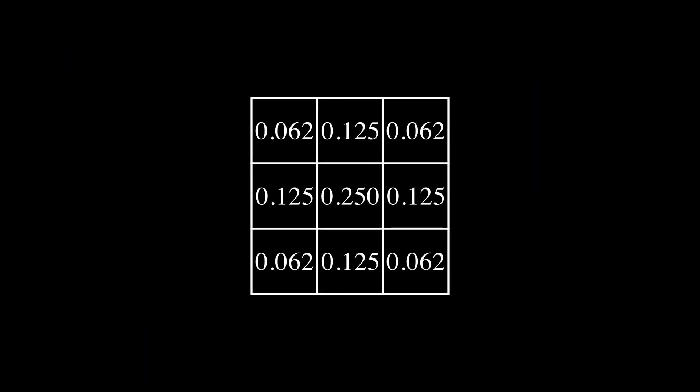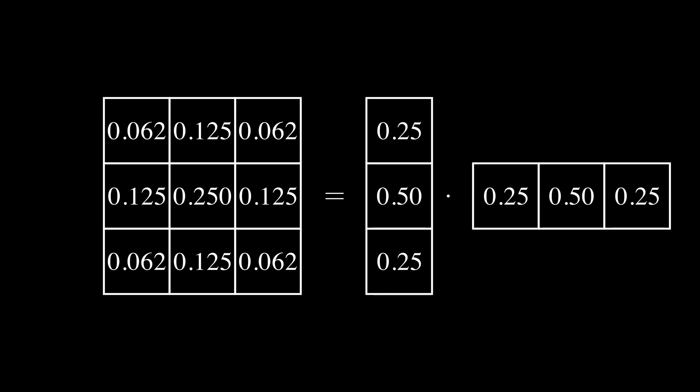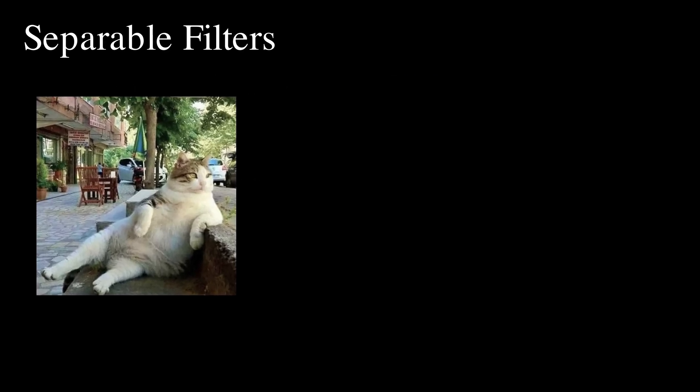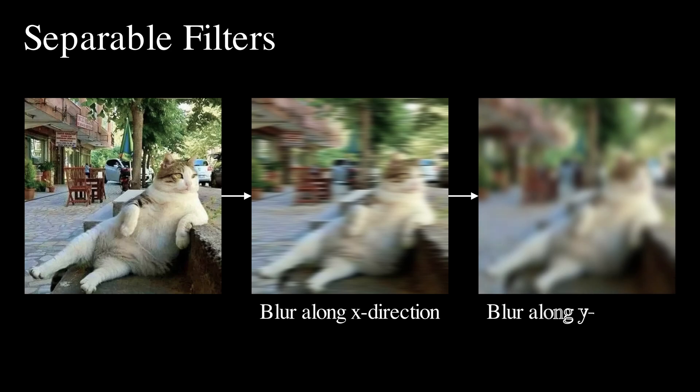We can make the Gaussian filter more efficient by leveraging separability. Here is a 3-by-3 binomial filter. This filter can be computed as the dot product of a column vector and a row vector. Instead of applying a 2D kernel to the entire image, we can filter the image along the x-axis first, then along the y-axis. The results are exactly the same as using the full 2D kernel. But this method is faster and more memory efficient.